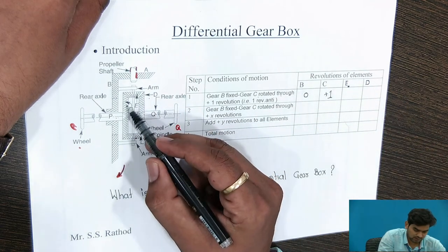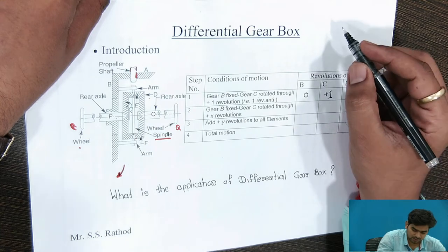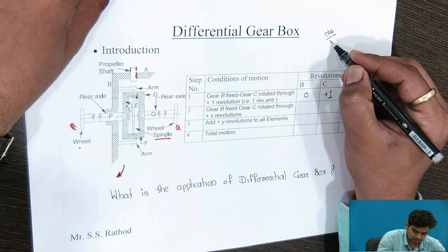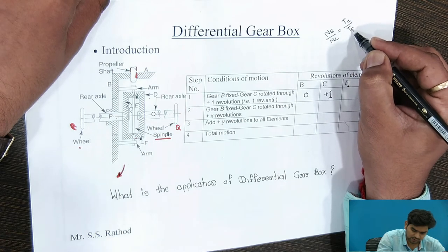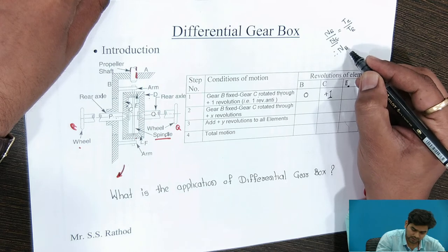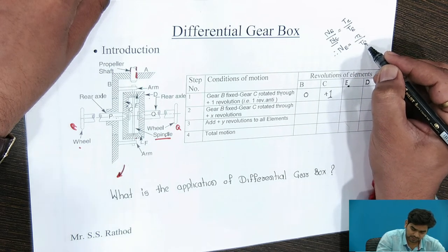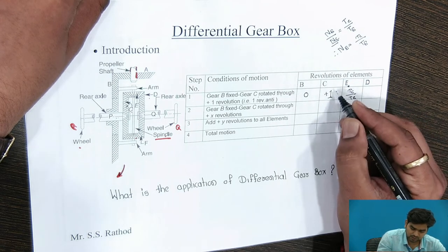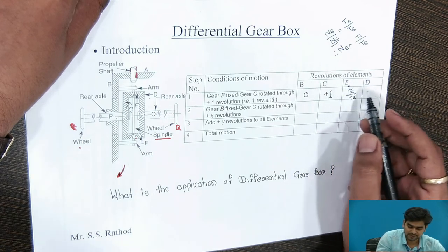Gears C and E are externally meshed bevel gears. So we know that NE / NC is inversely proportional to TC / TE. Therefore, as NC equals 1, we get NE = TC / TE. As both rotate in the same plane, we take the same sign convention — positive TC / TE.